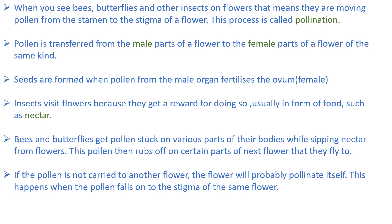So pollen is transferred from the male part of the flower to the female part of the flower of the same kind, and the seeds are formed with the help of fertilization. The seeds are formed when the pollen from the male organ fertilizes the ovum. Insects visit the flowers because they get a reward for doing so — that is the nectar.